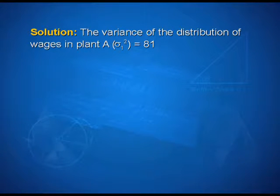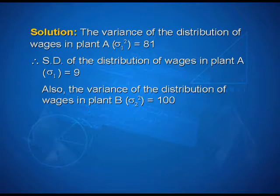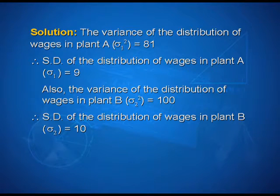Let us solve this example. The variance of the distribution of wages in plant A, sigma 1 square is equal to 81. Therefore, standard deviation of the distribution of wages in plant A, sigma 1 is equal to 9. Also, the variance of the distribution of wages in plant B, sigma 2 square is equal to 100. Therefore, standard deviation of the distribution of wages in plant B, sigma 2 is equal to 10. Since the average monthly wages in both the plants is same, that is 2500 rupees, therefore, the plant with greater standard deviation will have more variability. Thus, the plant B has greater variability in the individual wages.